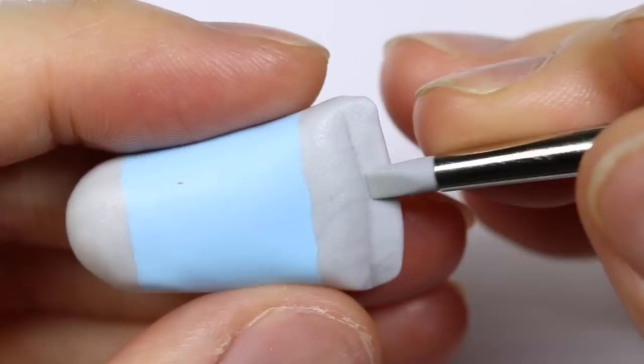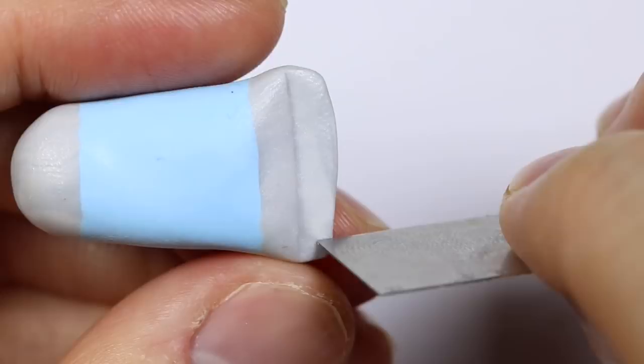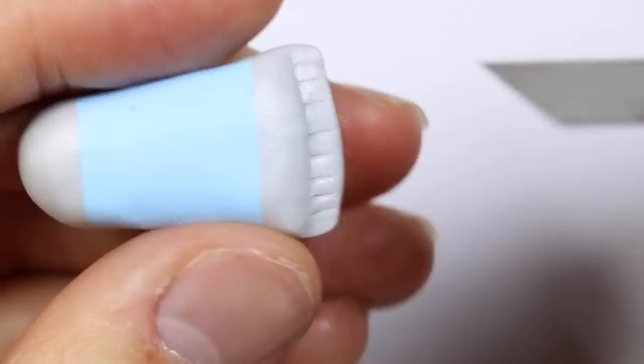And with my blending tool, I just define the flattened part of the toothpaste end. And I'm making indents with my blade to look like it's kind of that flattened pinched look.